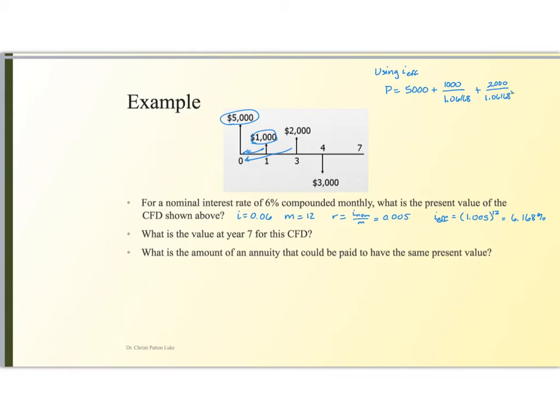And then I have this payment I make of $3,000, so minus 3,000 over 1 point, and that was not two, that was a three, that was a third power there. 1.06168 to the fourth power. And that's all of the payments I have. And so this is going to be $5,251.90.